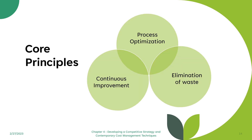The core principles of just-in-time include continuous improvement, process optimization, and elimination of waste. JIT requires strong focus on quality control and consistent, reliable suppliers, as well as close collaboration between departments within an organization and between suppliers and customers. By producing goods and services on demand, JIT helps organizations improve efficiency, reduce cost, and better meet customer needs.